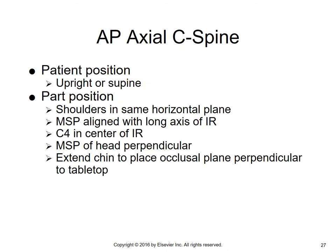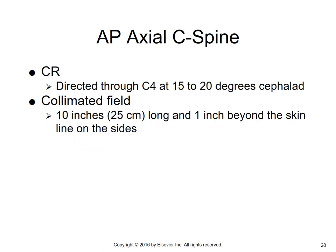For the AP axial, the patient is either upright or supine. Because it's an axial, you'll angle the central ray. Shoulders are in the same horizontal plane. MSP is aligned with the long axis of the IR. C4, which is about at the Adam's apple, is centered in the IR. The head is brought back to place the occlusal plane perpendicular to the tabletop. The central ray is directed through C4 at a 15 to 20 degree cephalad angle. Collimated field is 10 inches long, 1 inch beyond the skin line on both sides.